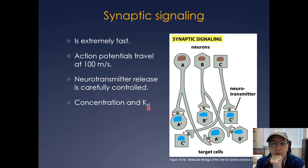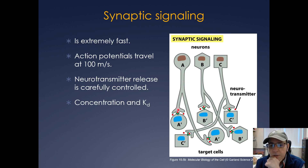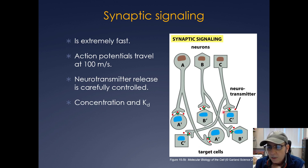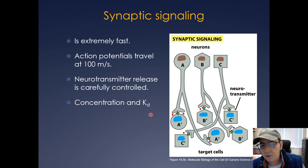In contrast, synaptic signaling is extremely fast — an action potential can travel about 100 meters per second. As it travels down the neuron, it causes vesicles in the synapse to fuse with the plasma membrane and release neurotransmitter. The neurotransmitter then binds to a receptor on the target cell, and the response is dependent on both the concentration of the neurotransmitter and the equilibrium dissociation constant.